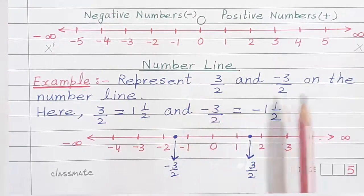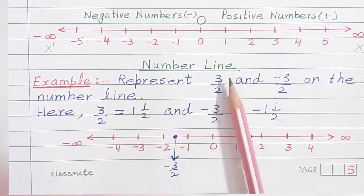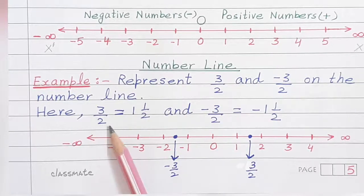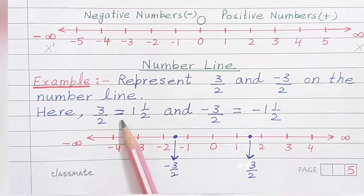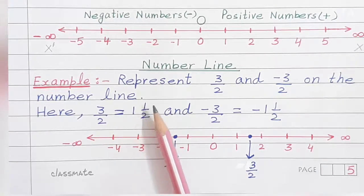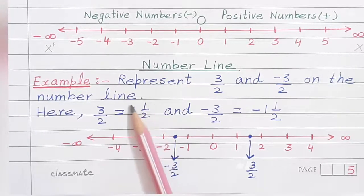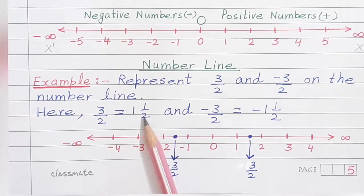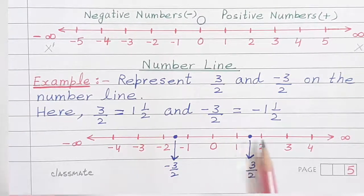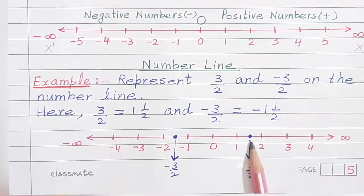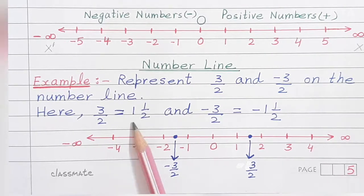Let us take up an example. We have 3 upon 2. Now, 3 upon 2 is an improper fraction, so it is equal to 1 and 1 upon 2 — that is 1 and a half. We know that 1 and a half lies between 1 and 2. So we will consider the midpoint of 1 and 2, and that is 3 by 2, or 1 and a half.